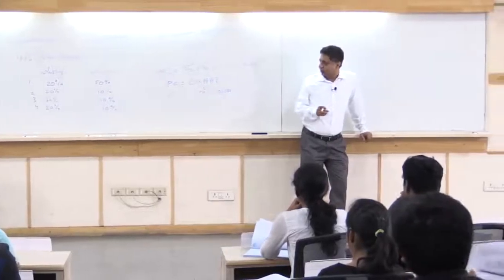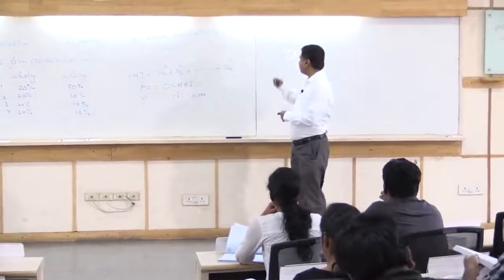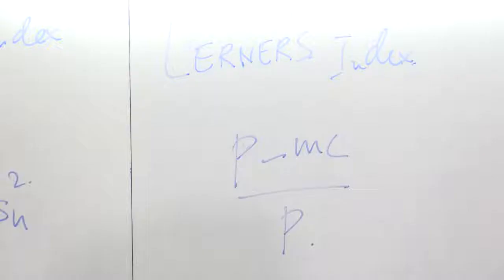A different way of thinking about it is to look at what is called the Lerner's index. The Lerner's index is the price minus the marginal cost divided by price. What will this be? By now you should be able to tell me, 1 over elasticity of demand.